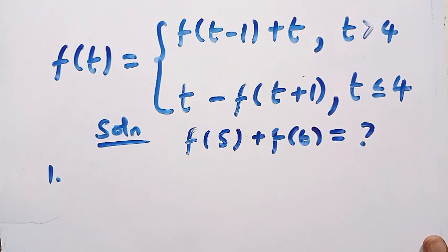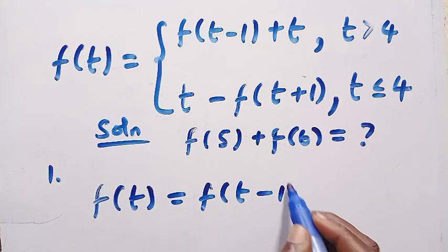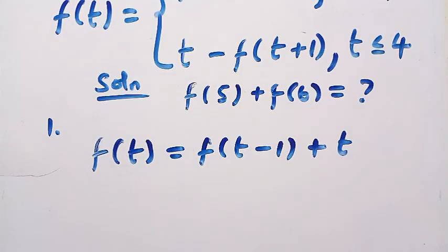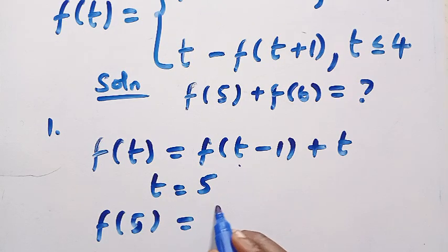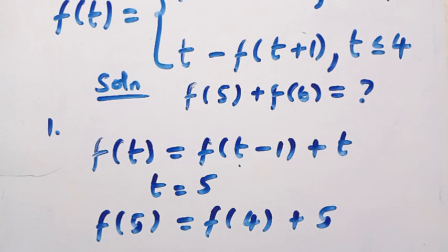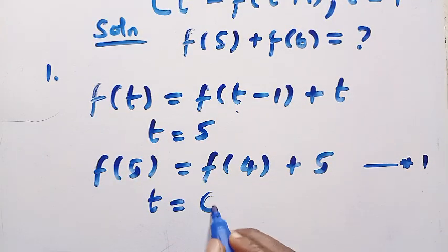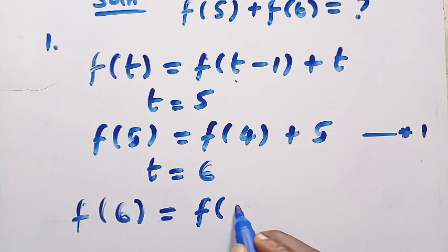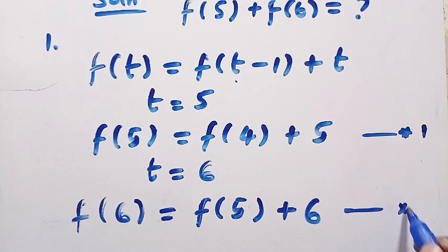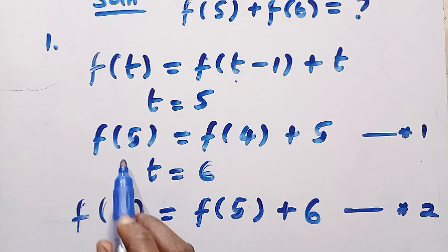Starting with the first method: suppose t equals 5. The first function is f(t) = f(t−1) + t. So we get f(5) = f(4) + 5 — call this equation 1. And if t equals 6, using the same function, we get f(6) = f(5) + 6 — call this equation 2. But we have f(4) here, which we have not gotten yet.